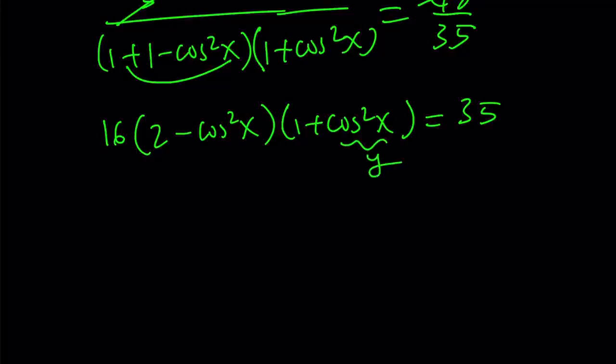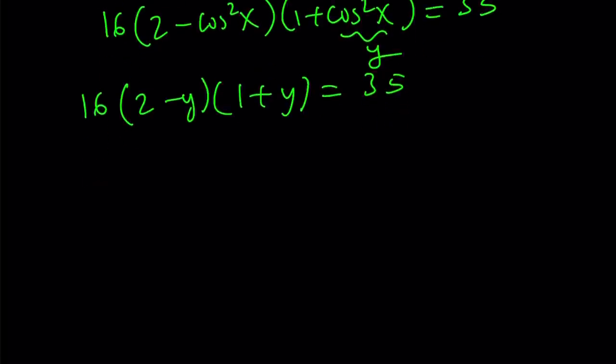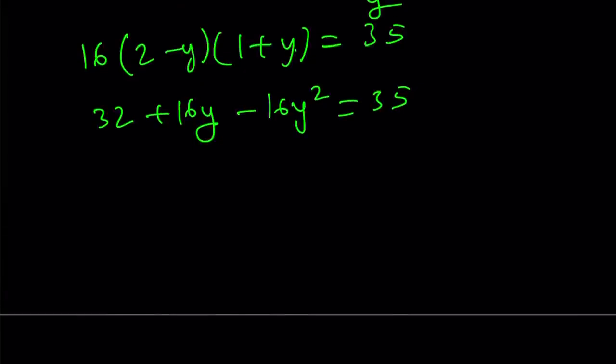And now we can replace cosine squared with something. How about calling it y? And don't ask why. We get 16 times 2 minus y times 1 plus y equals 35. And this gives us the following. We're going to get 32. And we're going to get 2y minus y, which is y basically. So that's going to give us 16y. And then we're going to get minus y squared minus 16y squared equals 35. Now, if you put everything on the right-hand side, we get 16y squared minus 16y plus 3 is equal to 0.